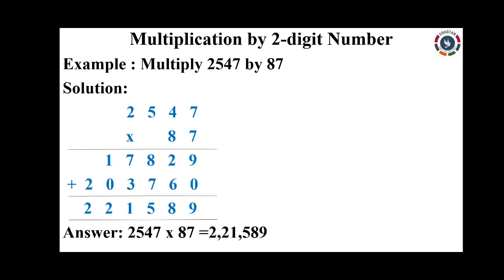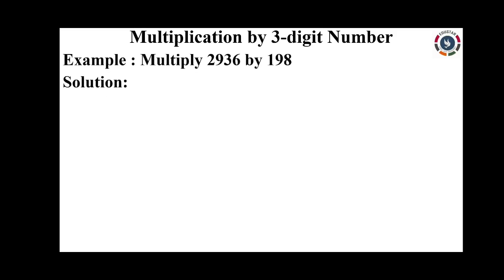I hope students, you have understood multiplication by a 2-digit number. Next, let us see multiplication by a 3-digit number. Multiply 2936 by 198. Here the bigger number 2936 is the multiplicand and the smaller number 198 is the multiplier. Arrange the given numbers and always start multiplication from the ones place digit, just like addition and subtraction. Multiply the multiplicand 2936 by the ones place digit of multiplier 198.